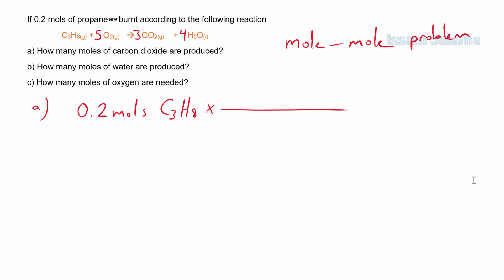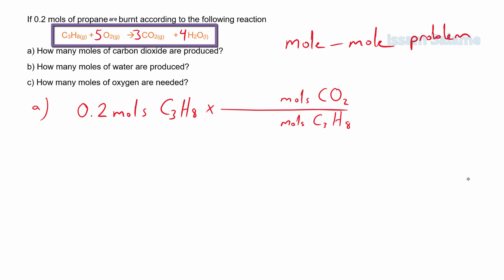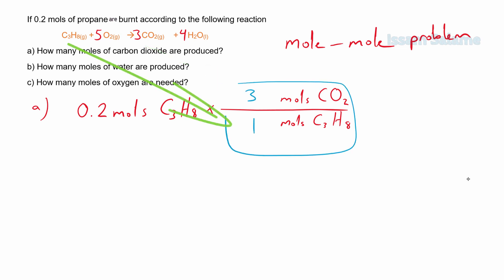For part A, we start with the given: 0.2 moles of propane. We multiply by the conversion factor — in the denominator we put moles of propane, and in the numerator we put moles of carbon dioxide. The coefficients come from the balanced chemical equation: 3 next to carbon dioxide and 1 next to propane. We cancel the matching units and the answer is 0.6 moles of carbon dioxide.